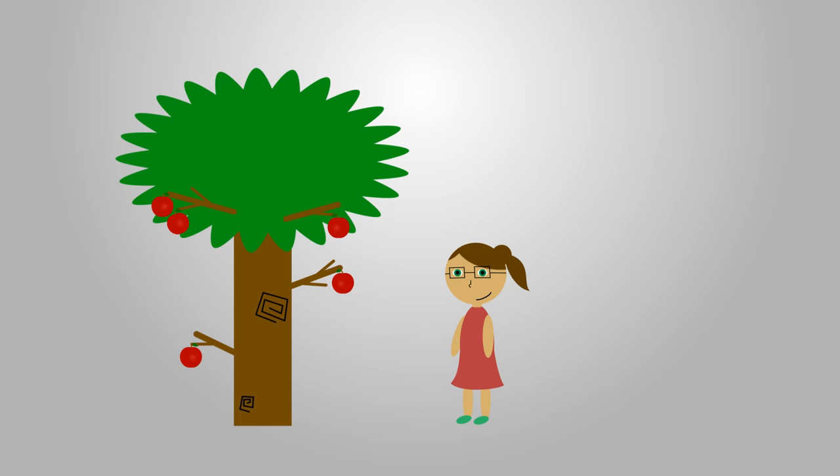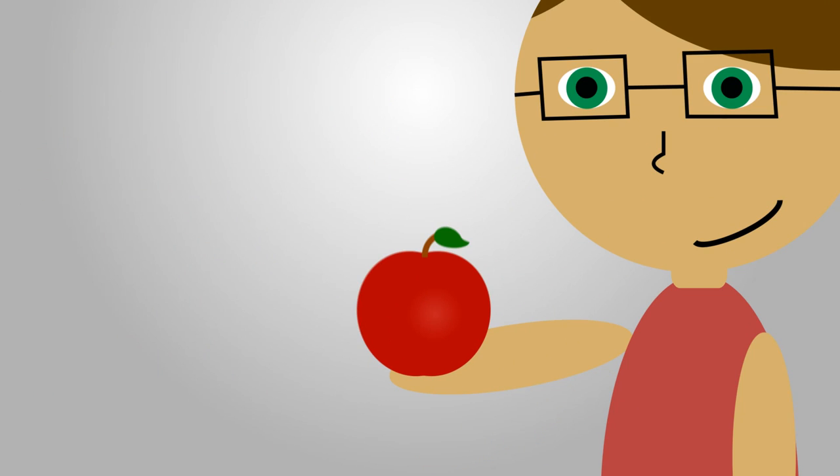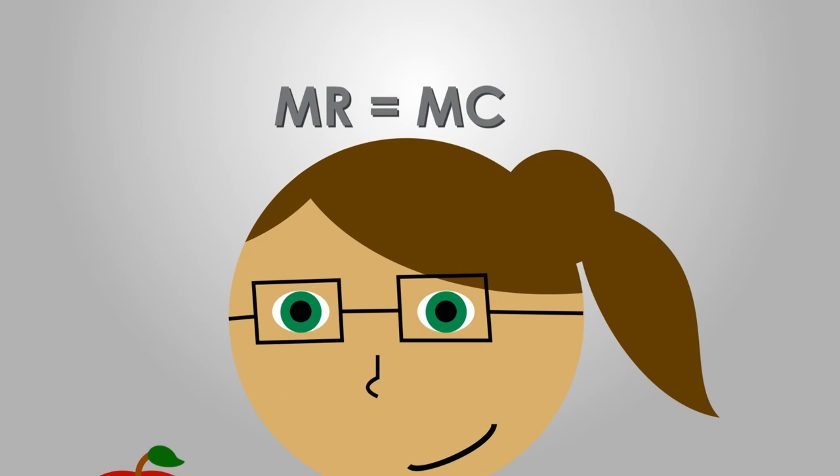For the purposes of this example, she will sell all of her apples to the local cider mill for 50 cents each. Jan knows that to maximize her profits, she should continue to harvest apples until she reaches the point that her marginal revenue equals the marginal cost.